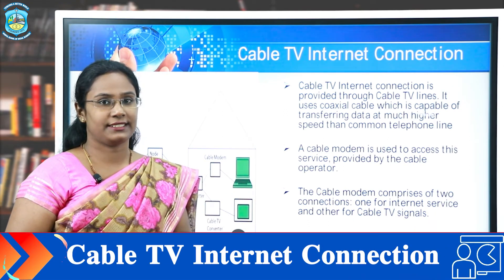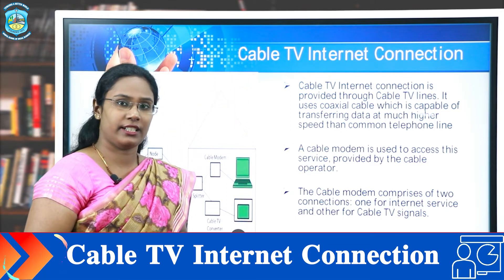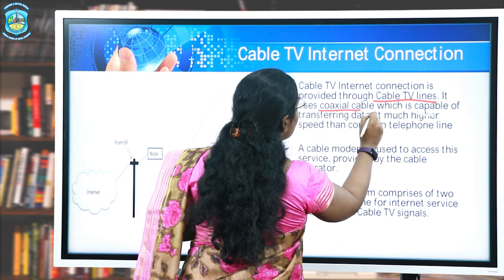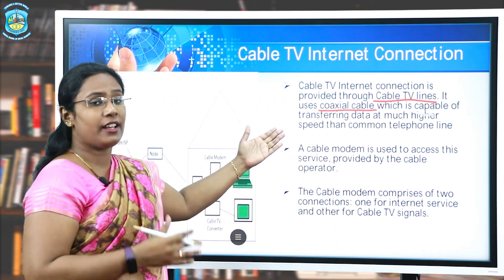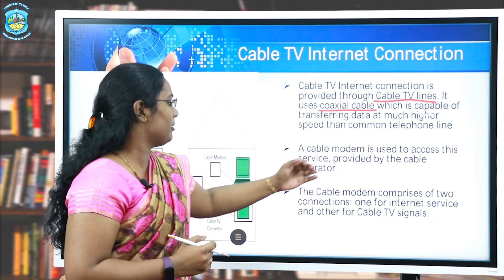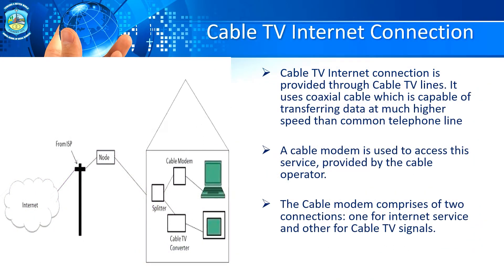The next type of internet connection is Cable TV internet connection. From the name itself it is clear that it provides internet connectivity through cable TV lines. It uses coaxial cable which is capable of transferring data at much higher speed than the common telephone line. A cable modem is used to access this service provided by the cable TV operator. This modem comprises two connections: first for internet service and second for cable TV signal, meaning this cable TV line can be used for watching television as well as for internet access.